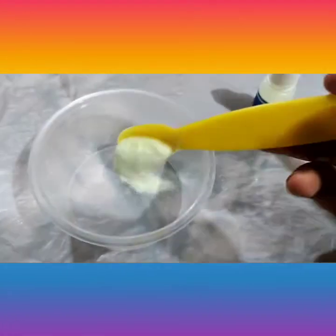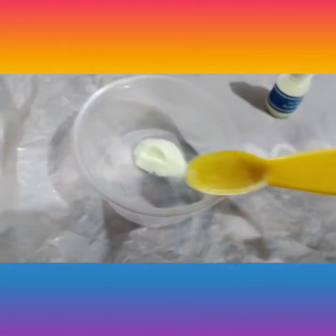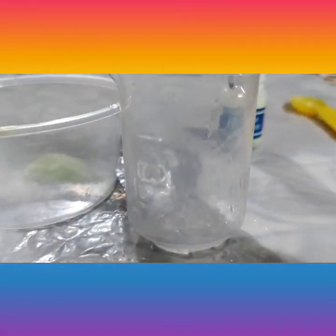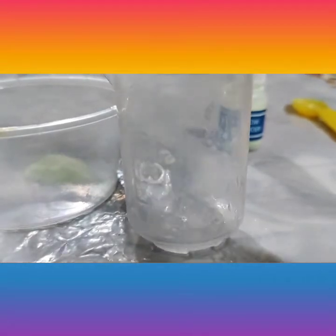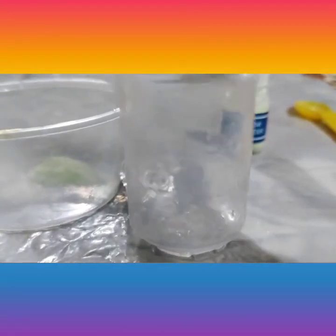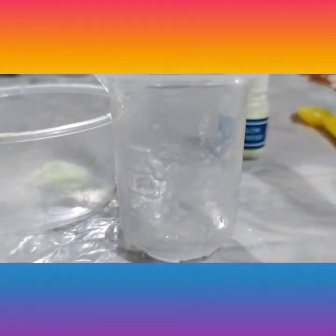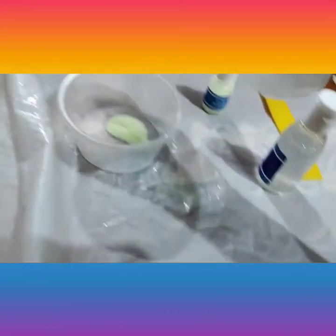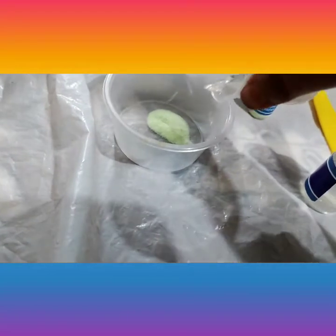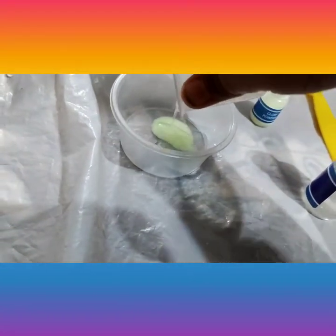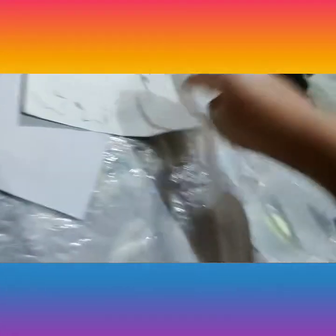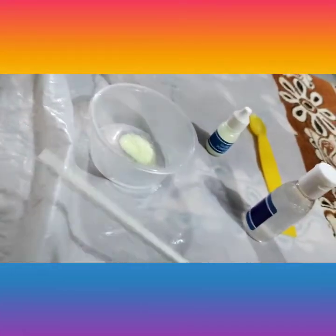We need to pour 5ml of glue into the glue powder. So let's fill it with the glue. Done. And let's pour it in the powder. And let's mix it a little bit.